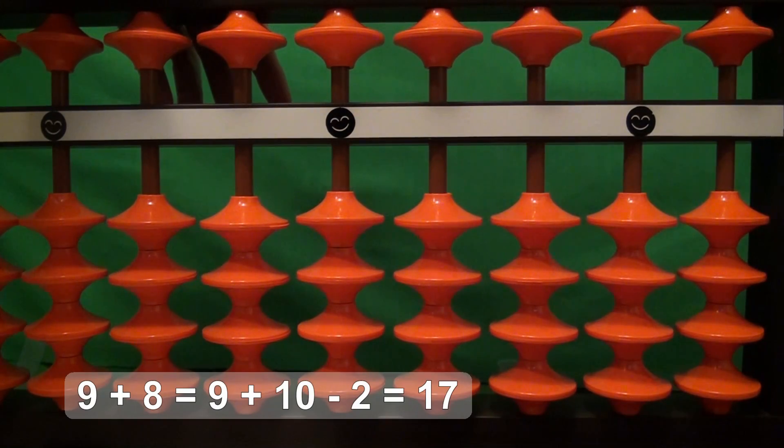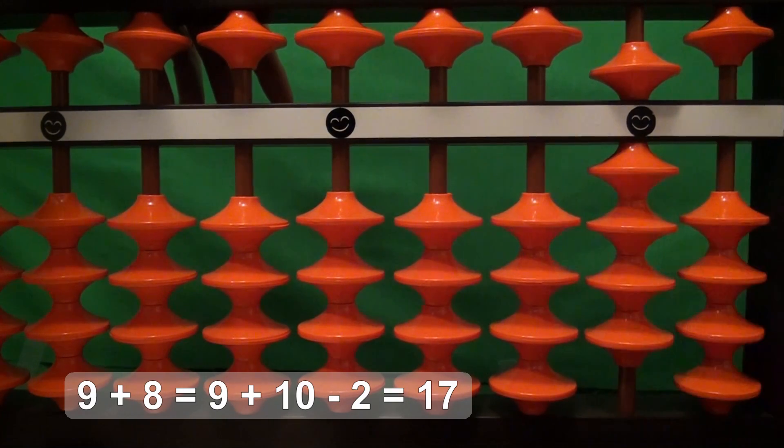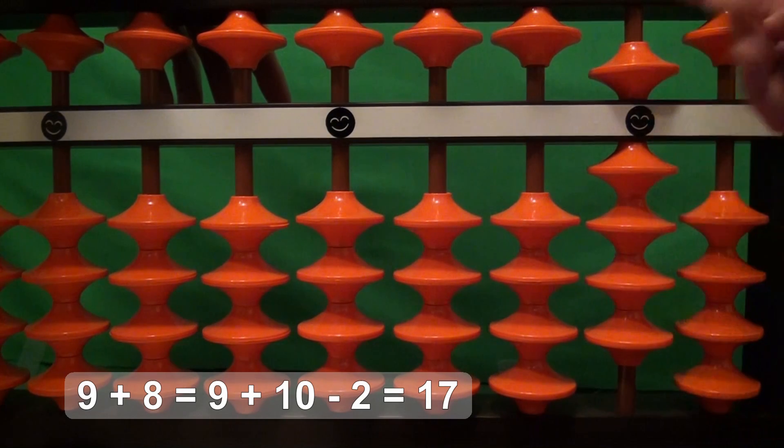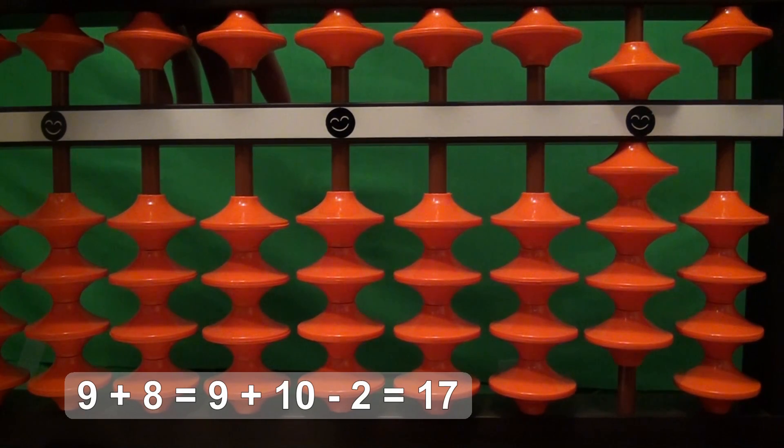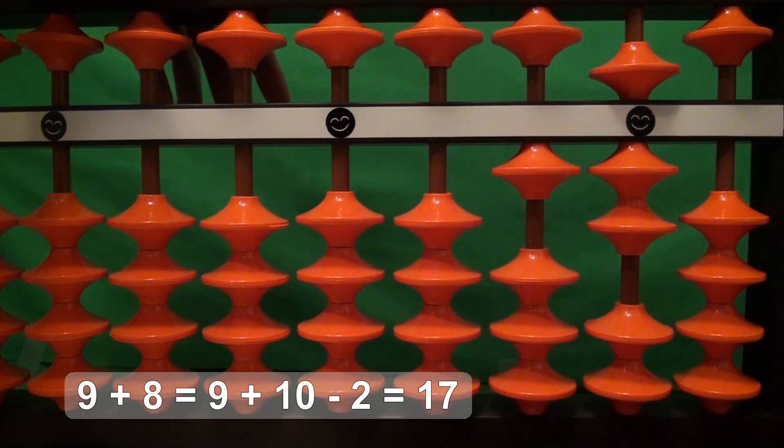Next problem, 9 plus 8. 5 and 4 is 9. We want to add 8. We don't have any beads that we can use. So we want to think of adding 8 as adding 10 and taking away 2. Add 10, take away 2 because 10 minus 2 is 8. We've added 8 and our answer is 17.